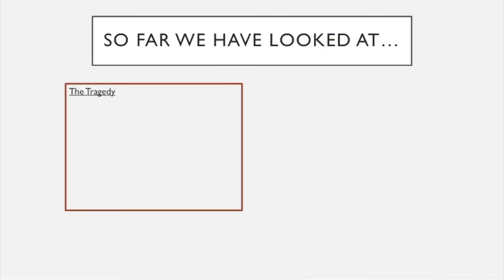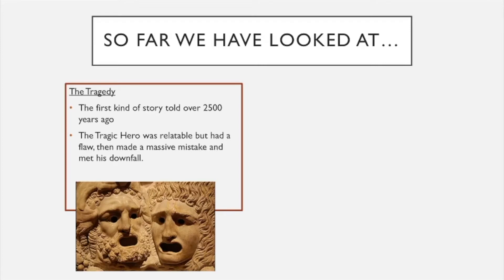We started off by looking at tragedy — the first kind of story told over 2,500 years ago. We saw that it had a tragic hero who was relatable but had a flaw, and that flaw made them make a massive mistake and meet their downfall. That picture there is a tragedy mask that, as you remember, the actors would wear so people at the back of the massive amphitheater could see exactly what was going on.